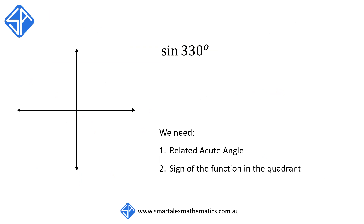Our second example: we're going to express sine 330 degrees in terms of its related acute angle. Again, we need two pieces of information — the related acute angle and the sign of the sine function. We need to identify the position of the ray 330 degrees. Starting off with 0 degrees as the positive x-axis, rotation in the anticlockwise direction is positive, so we rotate a total of 330 degrees. The related acute angle is the acute angle between the ray and the x-axis, which is 30 degrees.